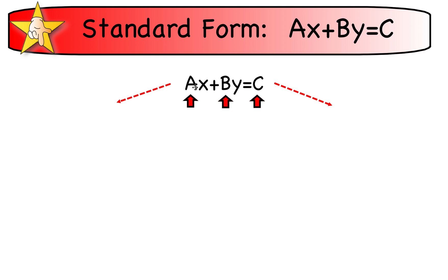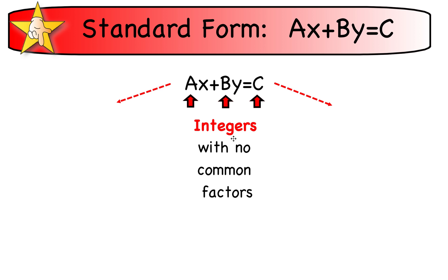The standard form ax + by = c has some restrictions on those coefficients a, b, and c. They must be integers — positive or negative whole numbers — with no common factors. For example, if I had 2x + 4y = 6, I would have to divide each coefficient by 2 because they all share a factor of 2. So no common factors are allowed between them.